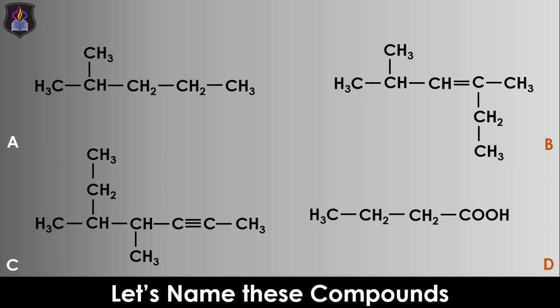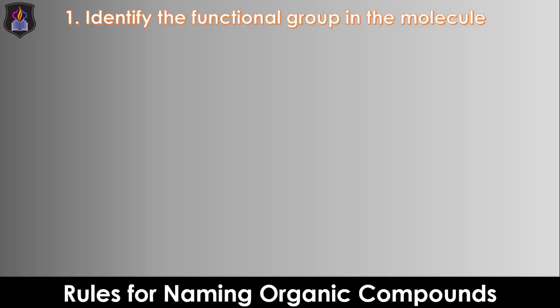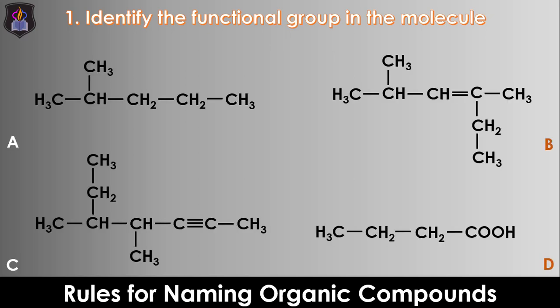Having known how to derive the different parts of the name of an organic compound, let's now look at the rules to be followed when naming aliphatic organic compounds. Rule 1: Identify the functional group in the molecule — that will be your suffix. For example, compound A has no functional group so it must be an alkane with the suffix -ane. B has a double bond so it is an alkene with the suffix -ene. C contains a triple bond making it an alkyne with the suffix -yne. And D possesses a carboxylic group, making it a carboxylic acid with the suffix -oic acid.